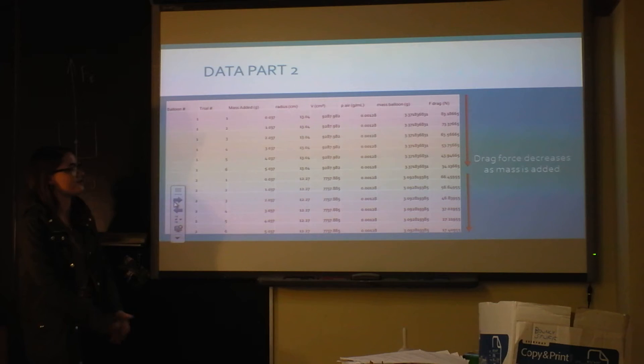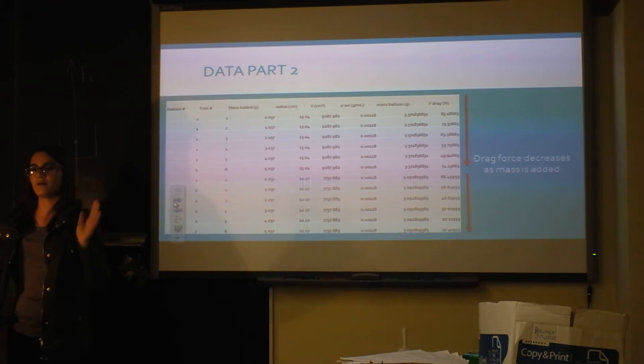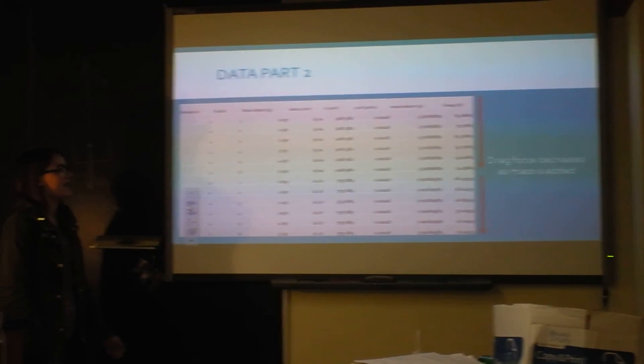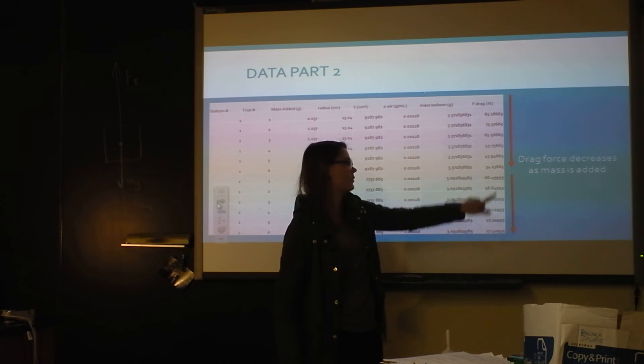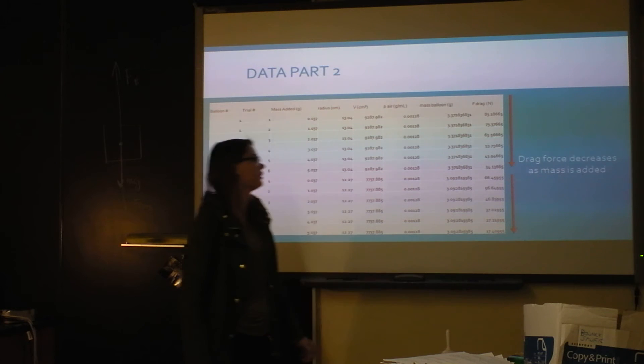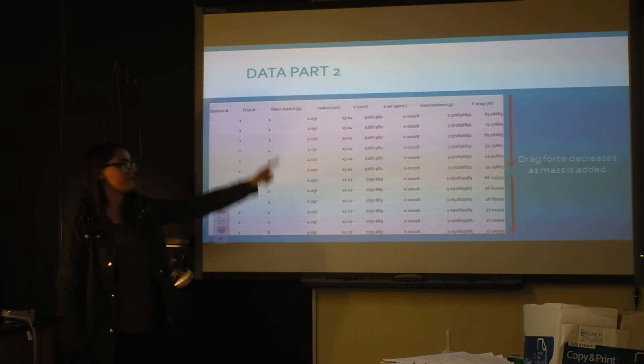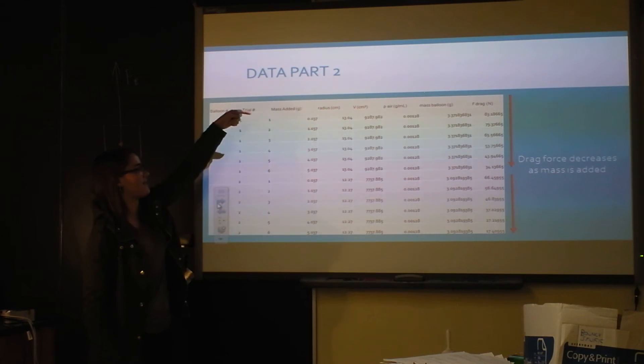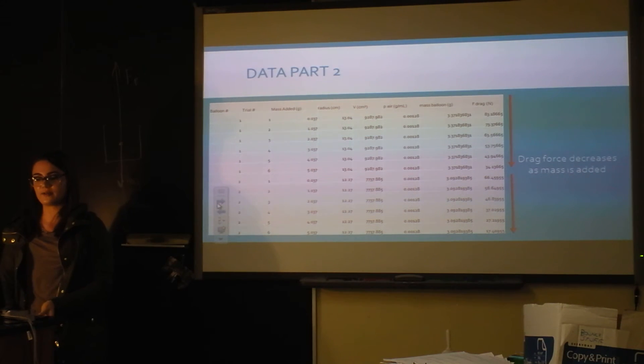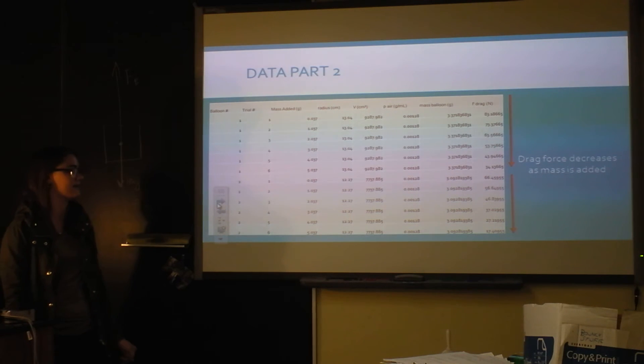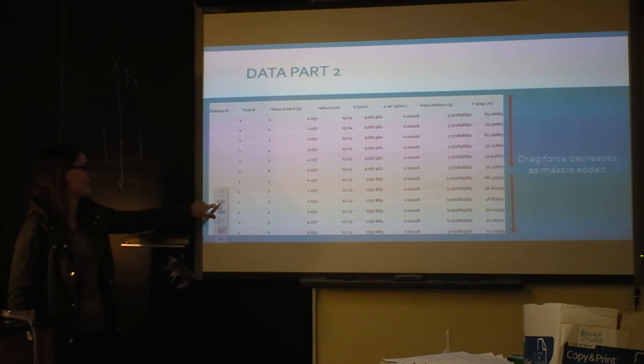Here's my part two. That was the video part that I showed. I basically just got the drag force. There's two different balloons. Where this arrow starts is where the new balloon occurs. I found, as you can see, the drag force is decreasing as I am adding mass. As I added mass, there was less force of air resistance on the balloon. This actually ended up making the balloon's path steadier, which I have graphs that show that.